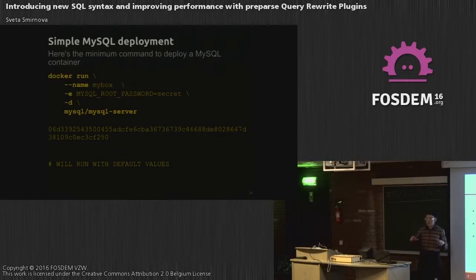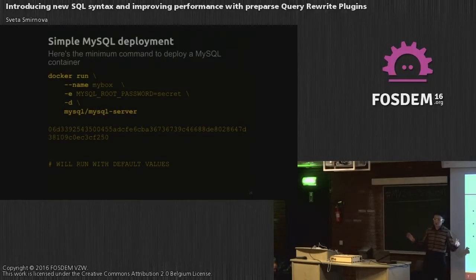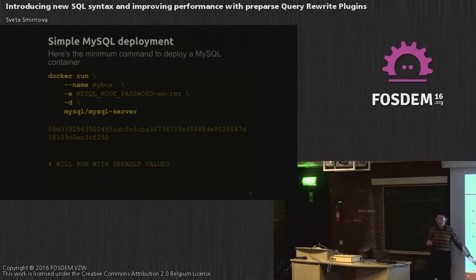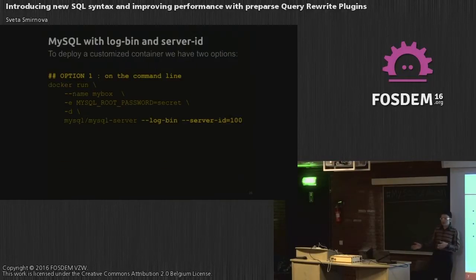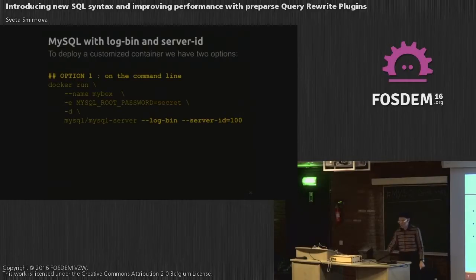So how it works: when your client connects to the MySQL server, there is a pre-parse plugin so you can intercept this connection and introduce or call something to affect further query execution. And then after the parse stage, when the query is parsed, the post-parse plugin comes in, which lets you tell the optimizer how to use indexes and do more low-level work.